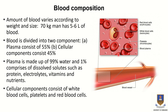The cellular component constitutes 45 percent and includes red blood cells, white blood cells, and platelets. Red blood cells are also called erythrocytes, white blood cells are also called leukocytes, and platelets are also called thrombocytes.